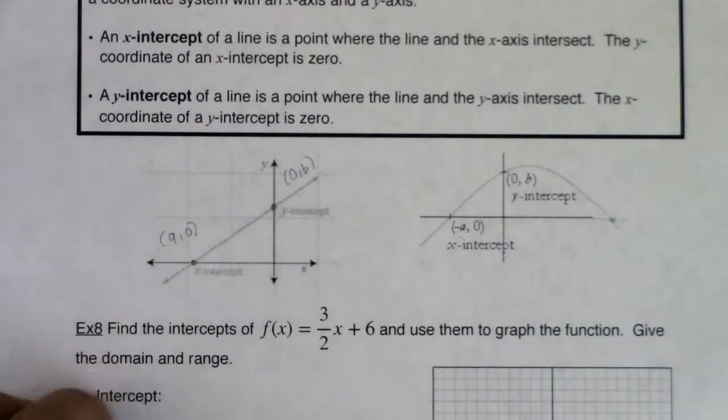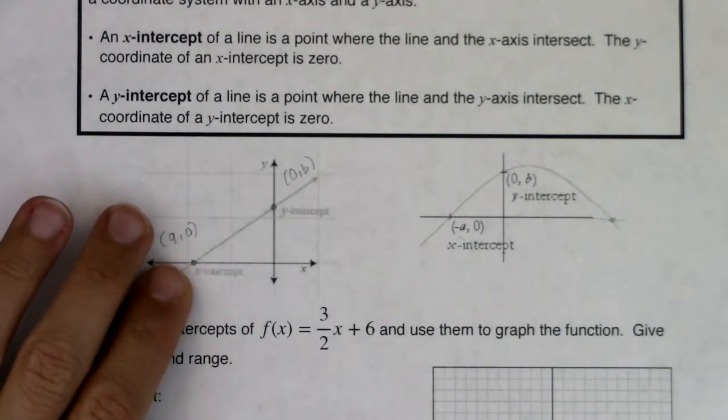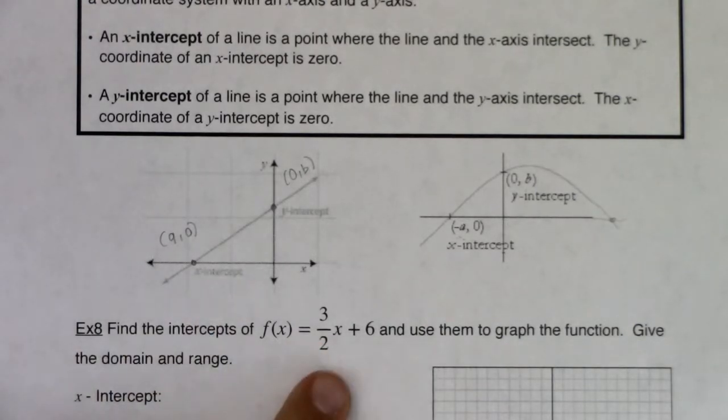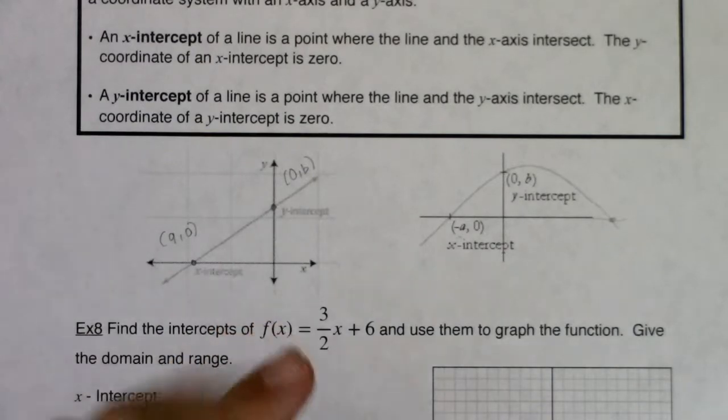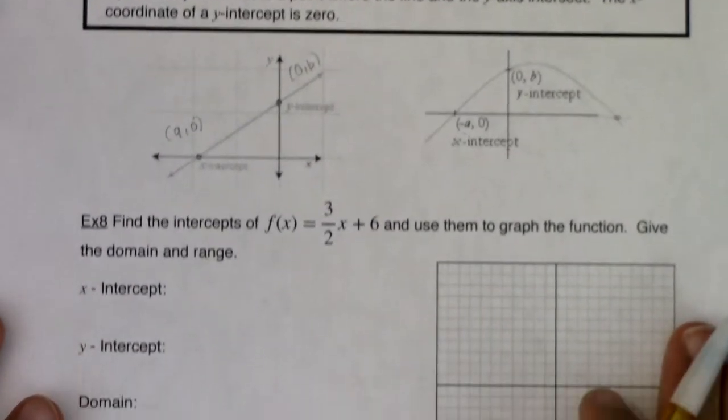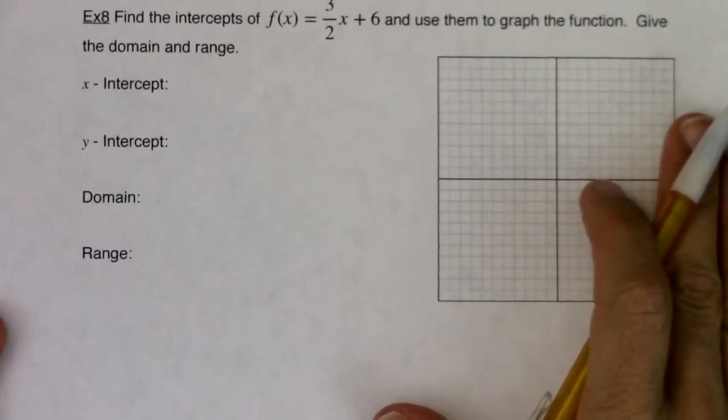So with that, we're going to take a look at another line. We just graphed lines in examples six and seven, one by plotting points and another using the slope and the y-intercept. Now we're going to find both of the intercepts. I want to just find the x and y-intercept and use those as the two points that determine my unique line. So let me go ahead and scoot this up so we get our whole problem in view.